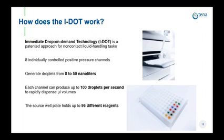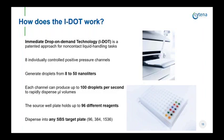What really sets the IDOT apart from other low volume liquid handlers is the disposable source well plate, which holds up to 96 different reagents. It looks like a normal 96-well plate that can be filled with standard pipettes, multi-channel pipettes, or even liquid handling robots. The system can dispense from any of these 96 wells into any well of a target plate, allowing even the most complex liquid handling tasks. It is compatible with standard plate formats such as 96, 384, or even 1536-well plates.